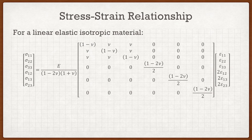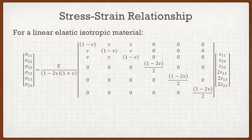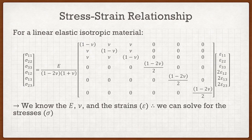Luckily, since we have a linear elastic isotropic material, we have a specific elasticity tensor — a six-by-six matrix — that converts strains to stresses. It's a function of E and ν, both of which we now know. The right-hand side is the strain vector, which we know from the given strain tensor. So we can solve for the left-hand side: the stress vector containing all the stress components we need. Once we find the stresses, we simply substitute them into the strain energy density equation, and we're done with part A.